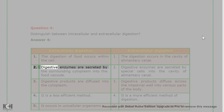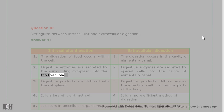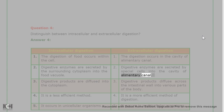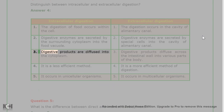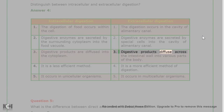2. Digestive enzymes are secreted by the surrounding cytoplasm into the food vacuole. 2. Digestive enzymes are secreted by special cells into the cavity of the alimentary canal. 3. Digestive products are diffused into the cytoplasm. 3. Digestive products diffuse across the intestinal wall into various parts of the body.